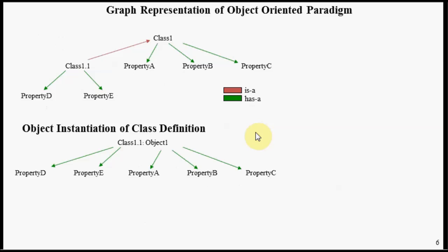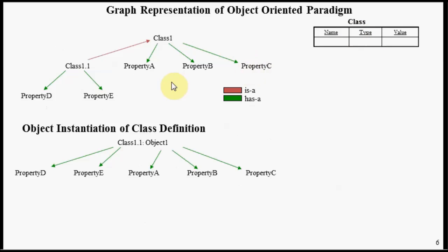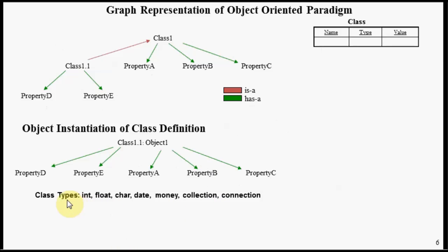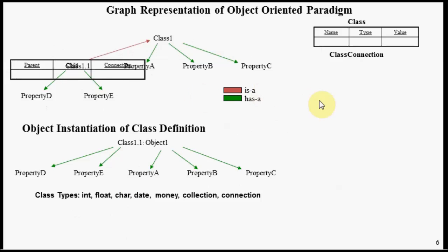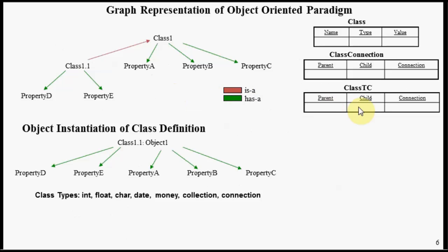Now let's look at the relational tables needed to support this paradigm. We have a class table representing the nodes of our class graph — basically a name-value pair with a type column and legal type values representing basic class types. We also have a class connection table of parent-child nodes with a connection type that is either 'has-a' or 'is-a'. Then we have a transitive closure table representing the transitive closure of this class graph.